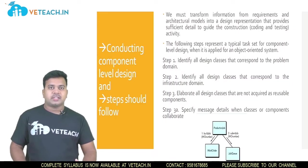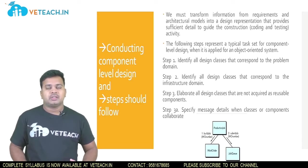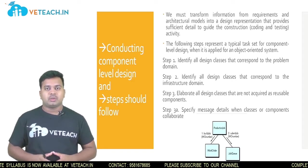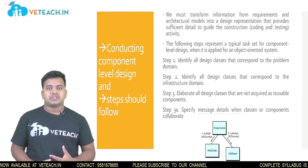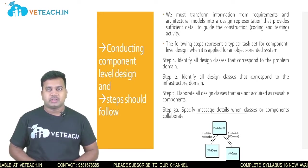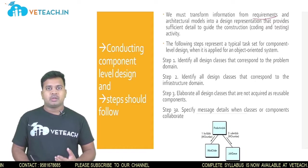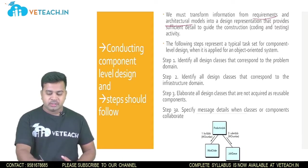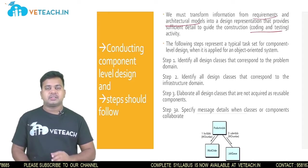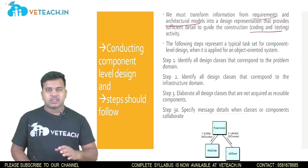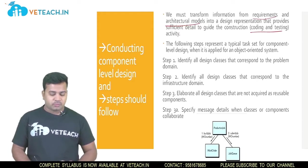What exactly is component level design and what happens in the design process? When you are developing any software project, initially you take information — the problem domain from the customer. Based on that information you prepare requirements, those requirements are modeled as the architectural design, and then coding is the final stage of the development process.